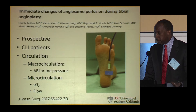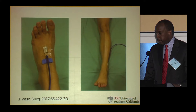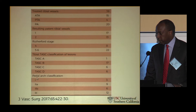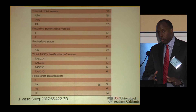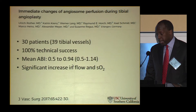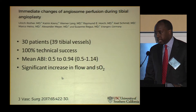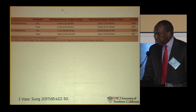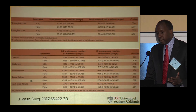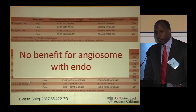One prospective study came out of Germany a couple of months ago. They looked at CLI patients prospectively, placing sensors on the different angiosome areas for the anterior tibial and peroneal distribution, and tried to classify whether the pedal arch was complete or not. In 30 patients, mean ABI improved quite a bit and O2 saturation increased based on those sensors. However, the increase was seen in both angiosome areas, and they could not find any difference based on diabetes, renal failure, or other factors — so they concluded there's no benefit for angiosome targeting with endovascular.